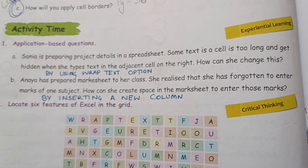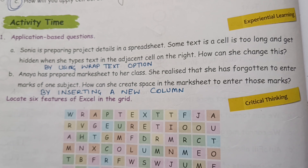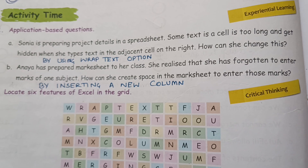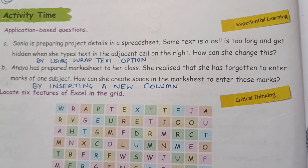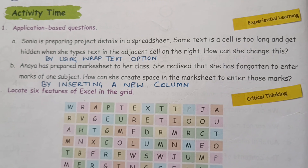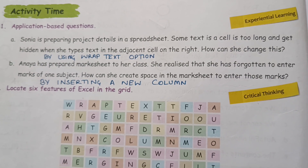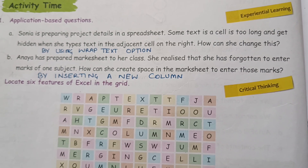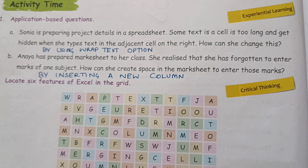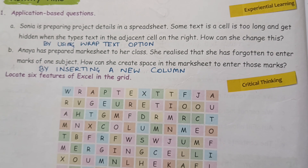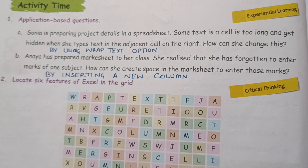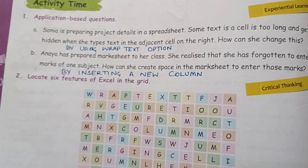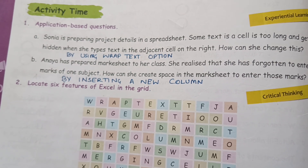Now activity time. Sonia is preparing project details in a spreadsheet. Some text in a cell is too long and gets hidden when she types text in the adjacent cells on the right. How can she change this? She can change this by using the Wrap Text option. Anaya has prepared a mark sheet for her class and realized she has forgotten to enter marks of one subject. How can she create space in the mark sheet to enter those marks? By inserting a new column. If you find the video useful please like and share. The other chapters are also there in my playlist, you can visit that.